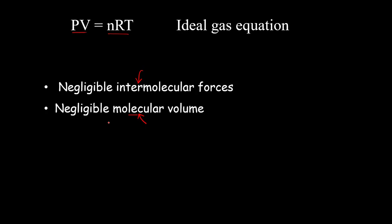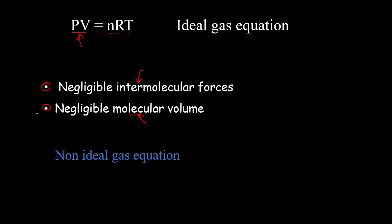Van der Waals comes up with a modified equation that will try to cater for these two assumptions. That equation is known as the Van der Waals equation, or the non-ideal gas equation, because we don't have any gas that is truly ideal. Basically, all gases at some point are non-ideal.